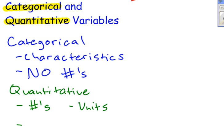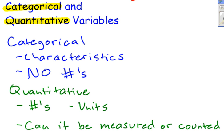Another huge question to ask yourself is, can it be measured or counted? If the data that you are collecting is collected by measuring something or counting something, then you are talking about quantitative data. If you measure something or count something, there's a very good chance that it's going to have units as well. So that leads us, once again, back to quantitative data.